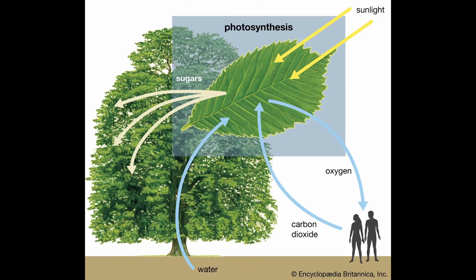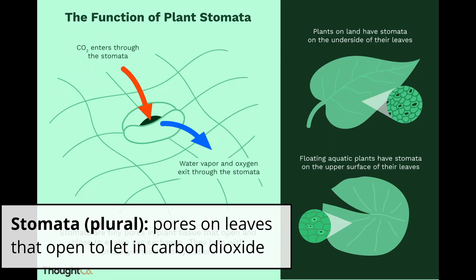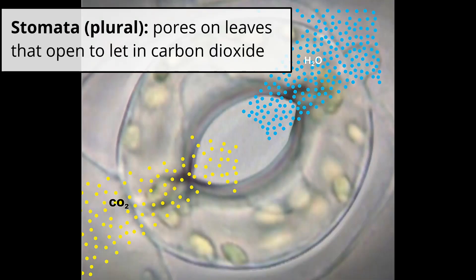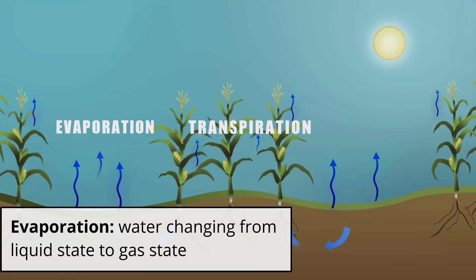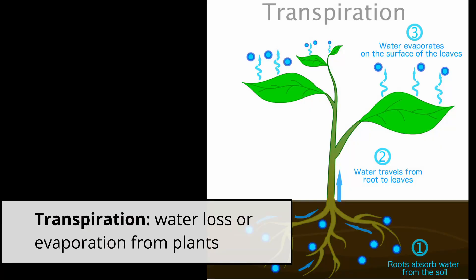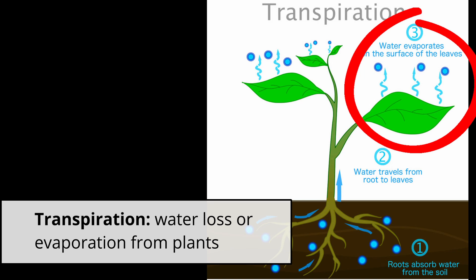In order to photosynthesize, plants need to get carbon dioxide from the atmosphere. They open up pores on their leaves called stomata, which allows carbon dioxide to enter the leaf, but at the same time water exits the leaf — and the plant isn't able to stop the water from leaving. Evaporation describes when water changes from a liquid state to a gas state, and transpiration is more specifically that evaporation off of plants.